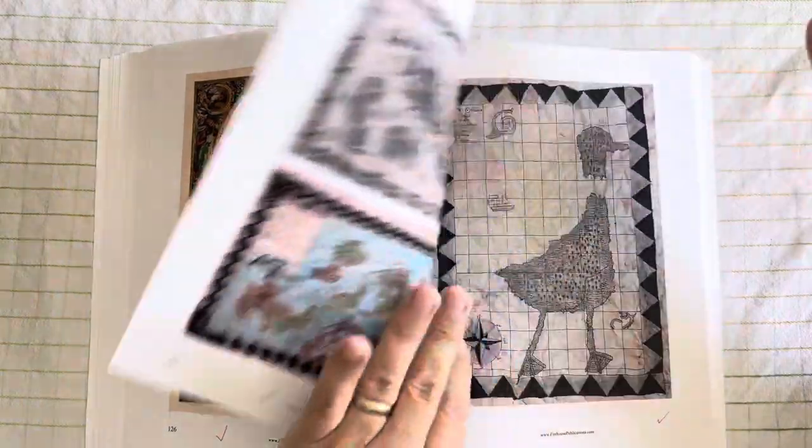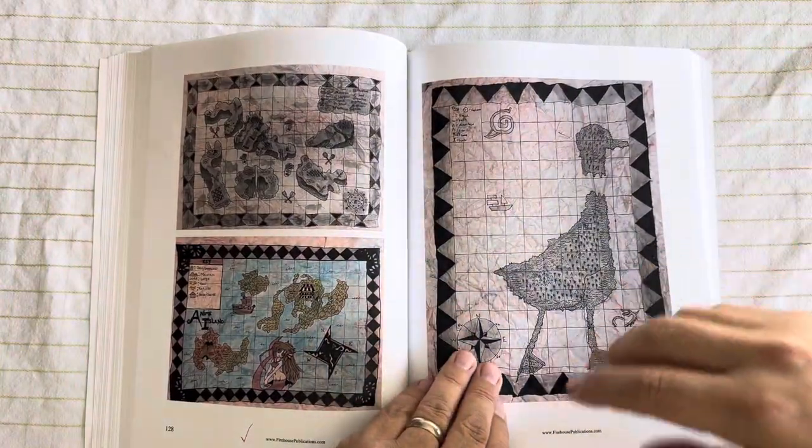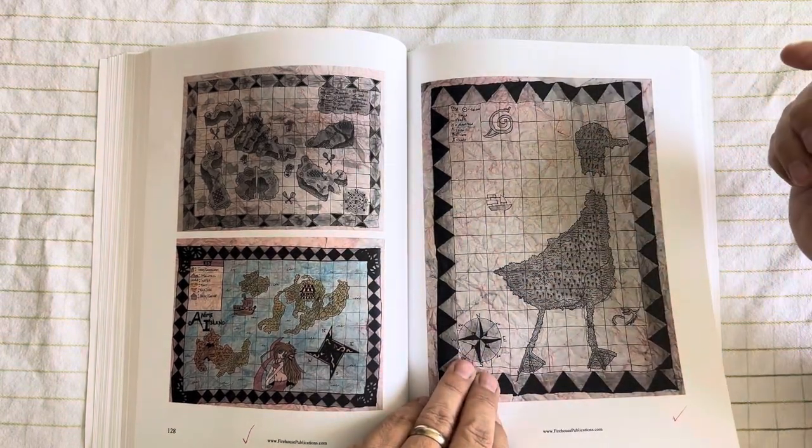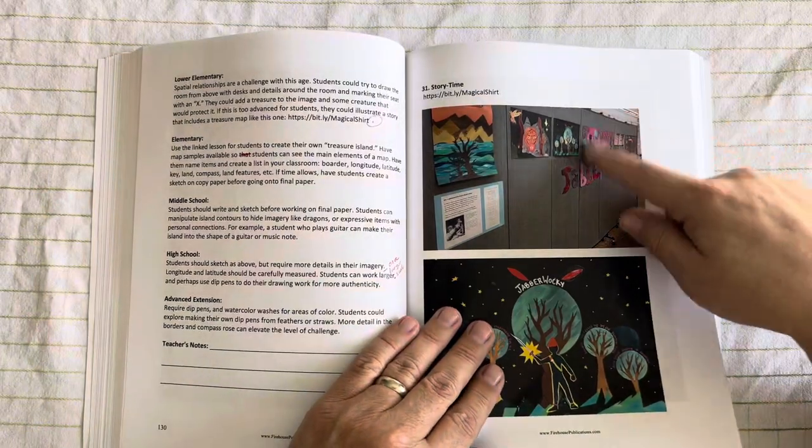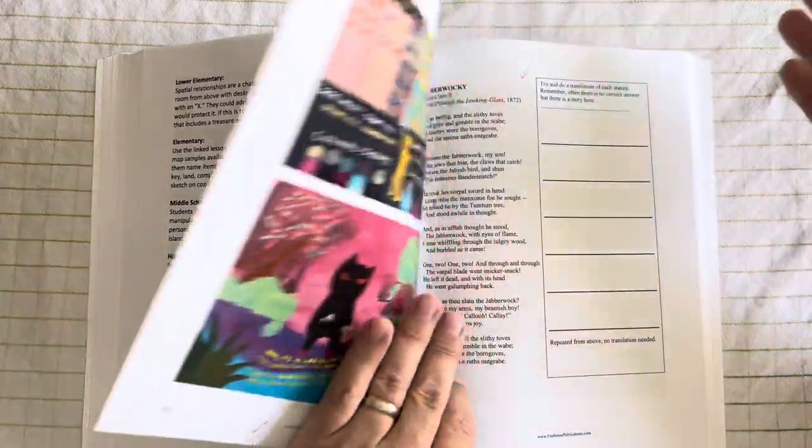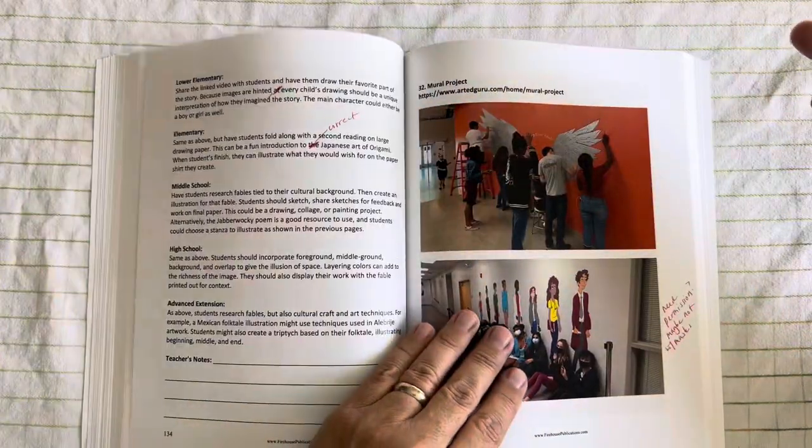Treasure maps, which can be a lot of fun. And you can see that they're in the shape of something. So this is a duck. And then story time illustrations. We use the Jabberwock as our sample, but you could use almost any literature connection.